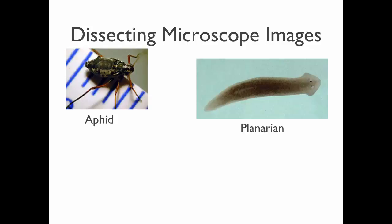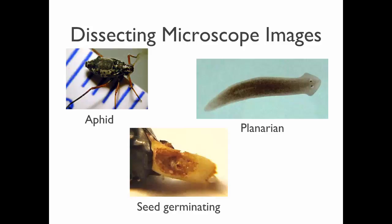Here are some images. An aphid, an insect—you can see it's three-dimensional. This is a planaria, a flatworm we'll look at later in the year. Here's a seed germinating. This shows a much more three-dimensional view than what we saw with the compound microscope.